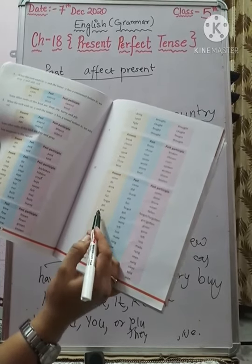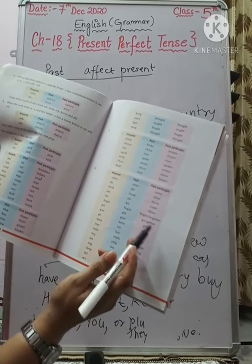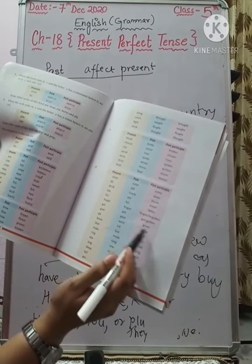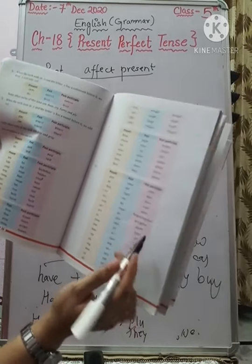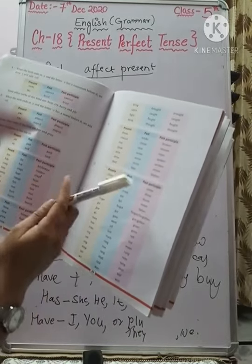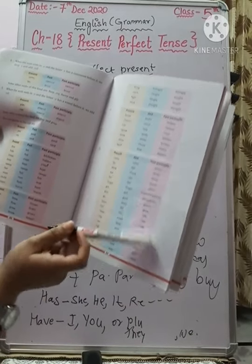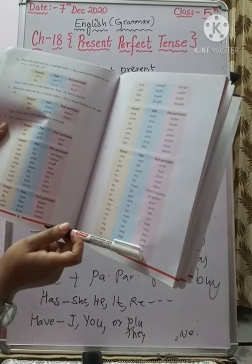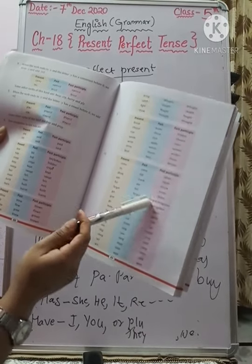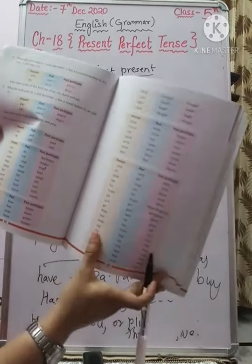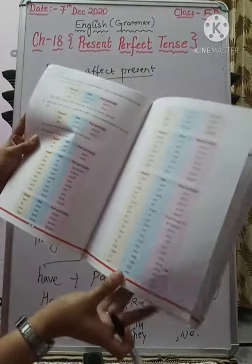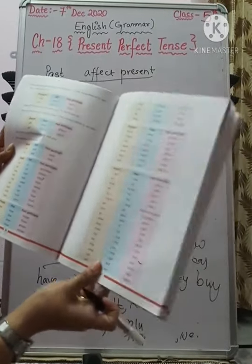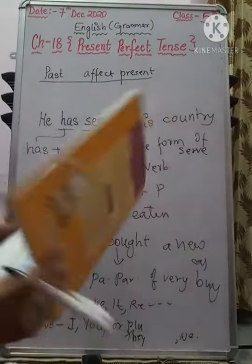Further irregular verbs include: get/got/gotten, give/gave/given, go/went/gone. The forms that change must be learned by heart — you must memorize the past participle form. Only then will this concept become clear and you will be able to use it correctly.